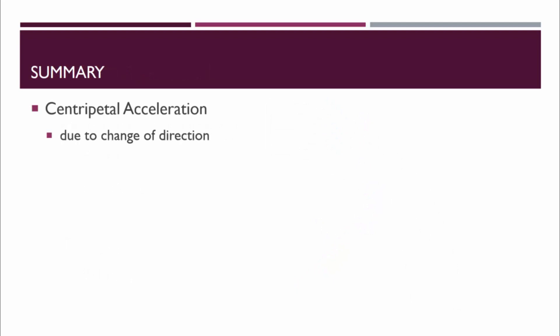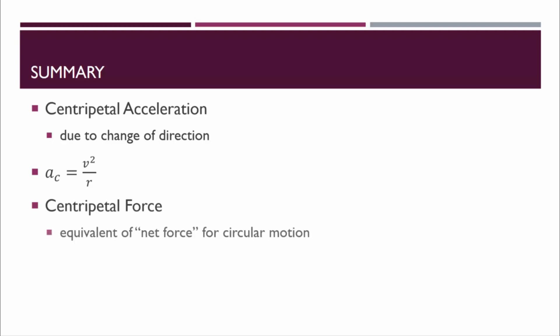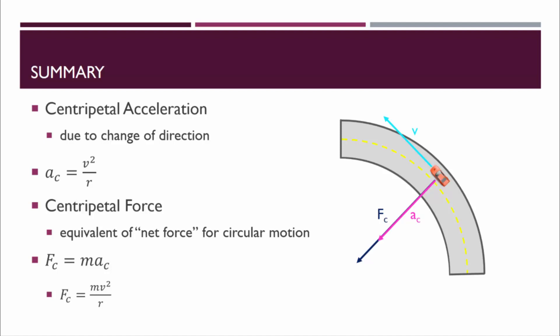Let's summarize. Centripetal acceleration is due to a change of direction, and the equation is AC equals v squared over r. Centripetal acceleration is caused by centripetal force, which is basically the equivalent of net force for circular motion. The equation for centripetal force is FC equals mac. We can combine this with the equation for centripetal acceleration to get FC equals mv squared over r. It's also important to remember the direction of the force, acceleration, and velocity vectors for an object traveling in a circle.